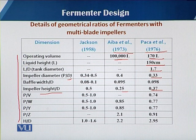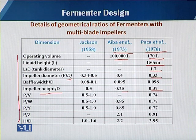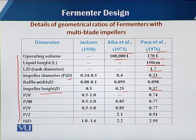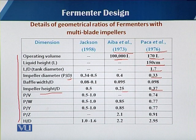The impeller height refers to the height of the first impeller from the bottom of the fermenter. When talking about multi-impellers, there is the first, then the second, then the third, then the fourth. The distance between two impellers is expressed as the ratios P/V, P/W, P/Y, and P/Z. In a later slide I will show what V, W, Y, and Z represent.